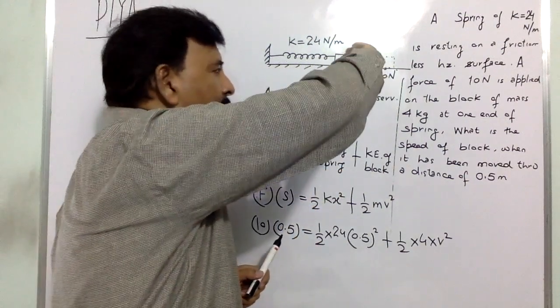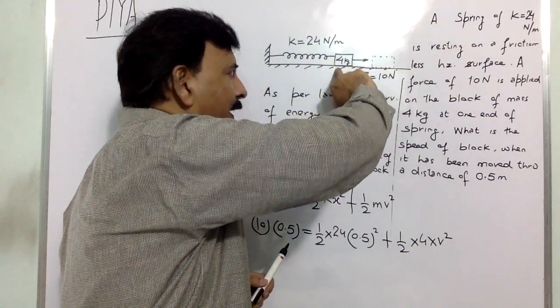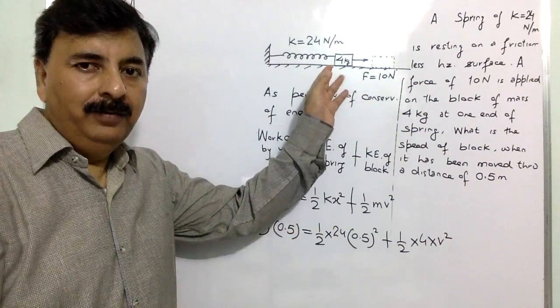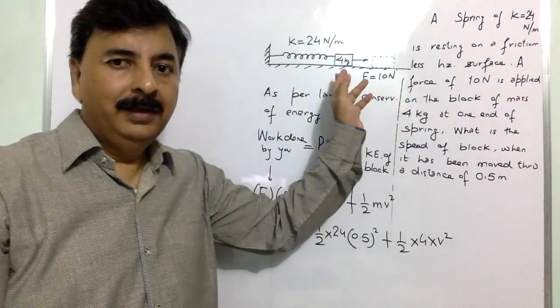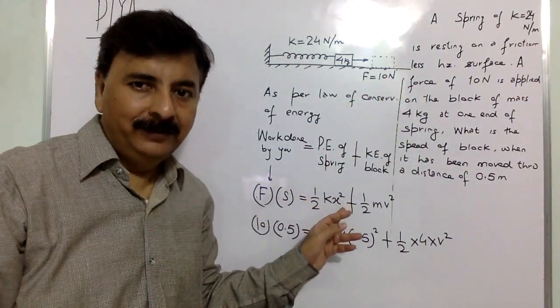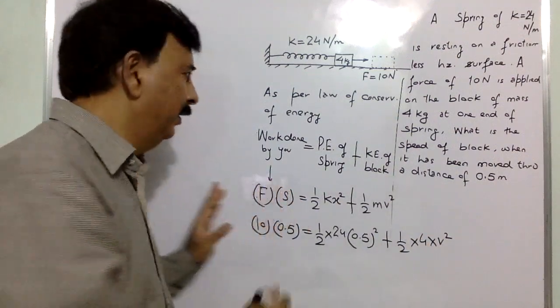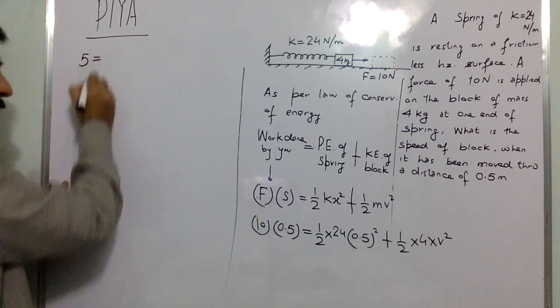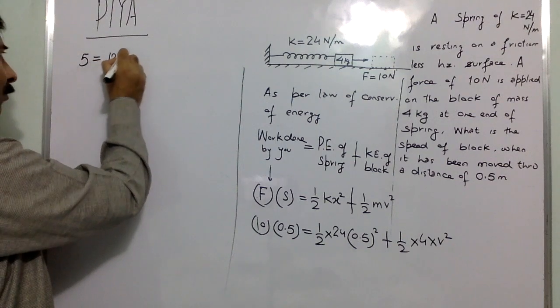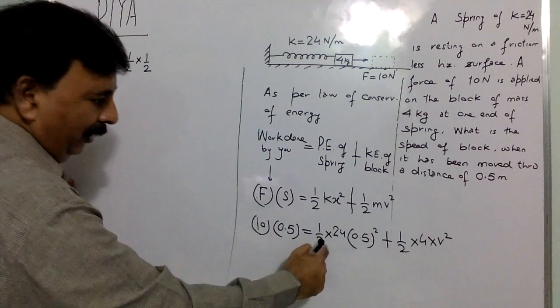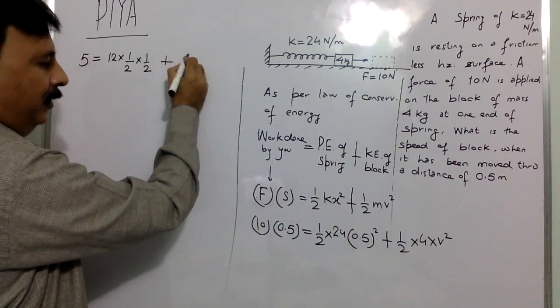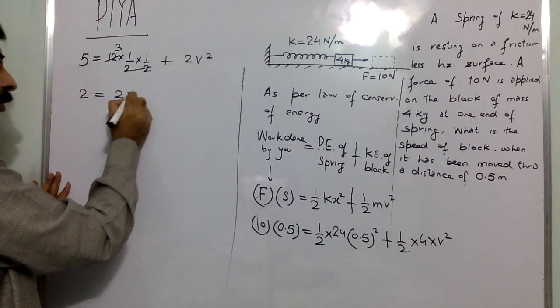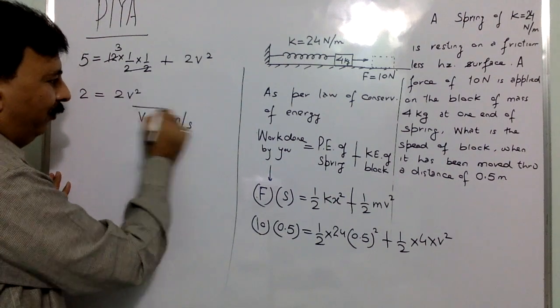When the block is forced, it has to move further also. So work done by you in displacing the block from this position to 0.5 meter, which it is bound to go further also. This work done is equal to potential energy of spring plus kinetic energy of block. So what is this? It is 10 into 0.5 is 5. Then it is 12 into 1 by 2 into 1 by 2 plus 2 V square. So 2 is equal to 2 V square. So what is V? It will gain a velocity of 1 meter per second.